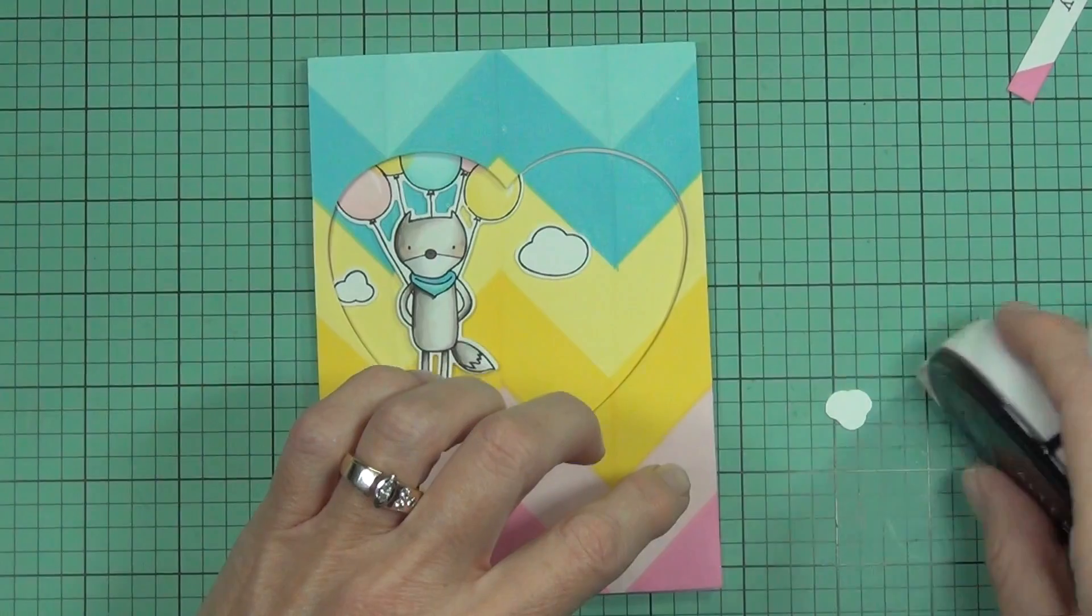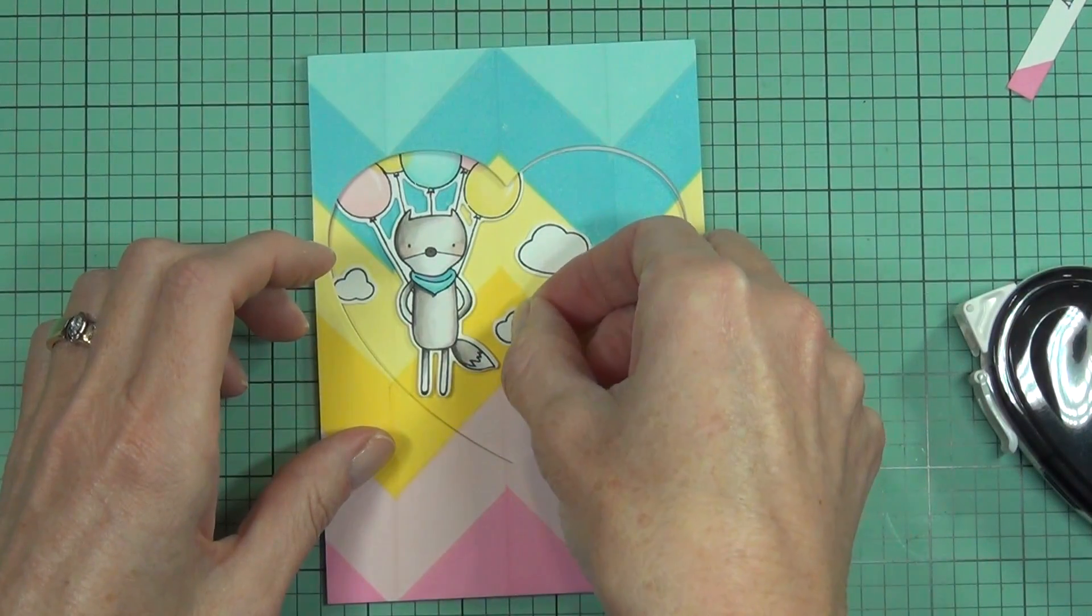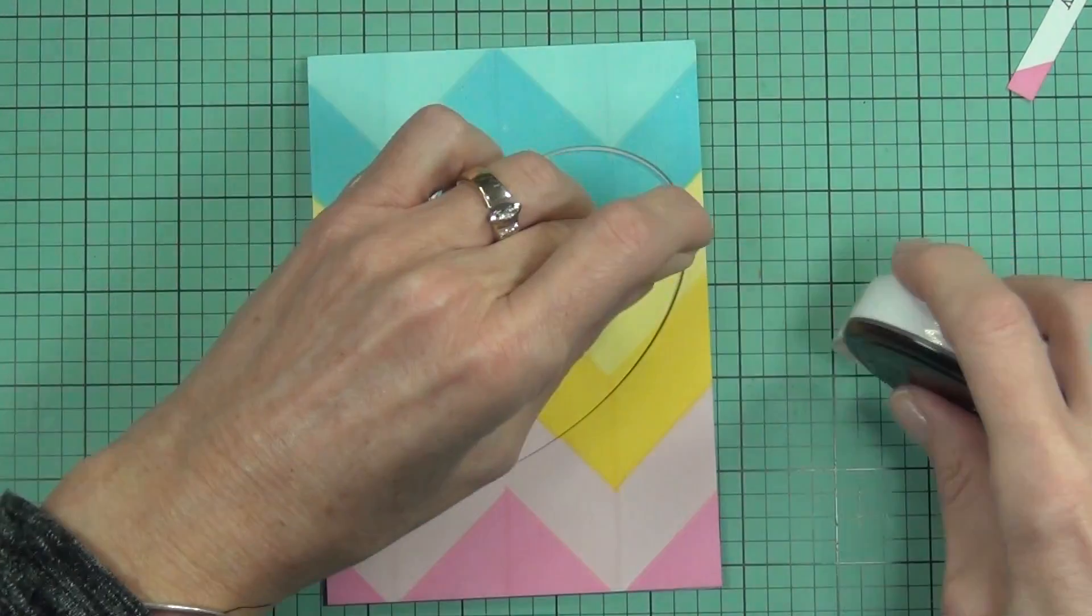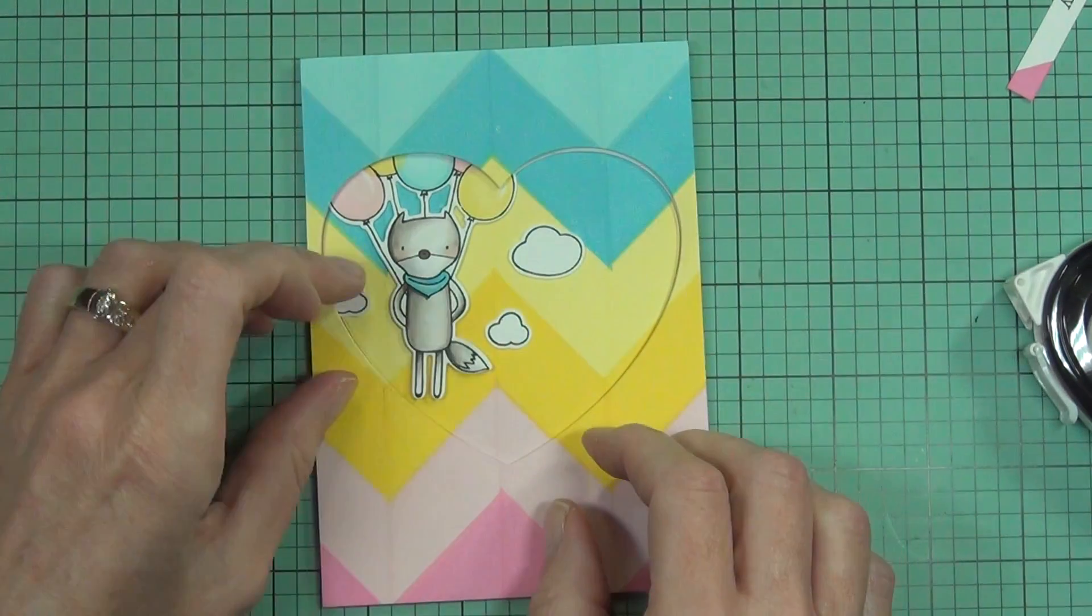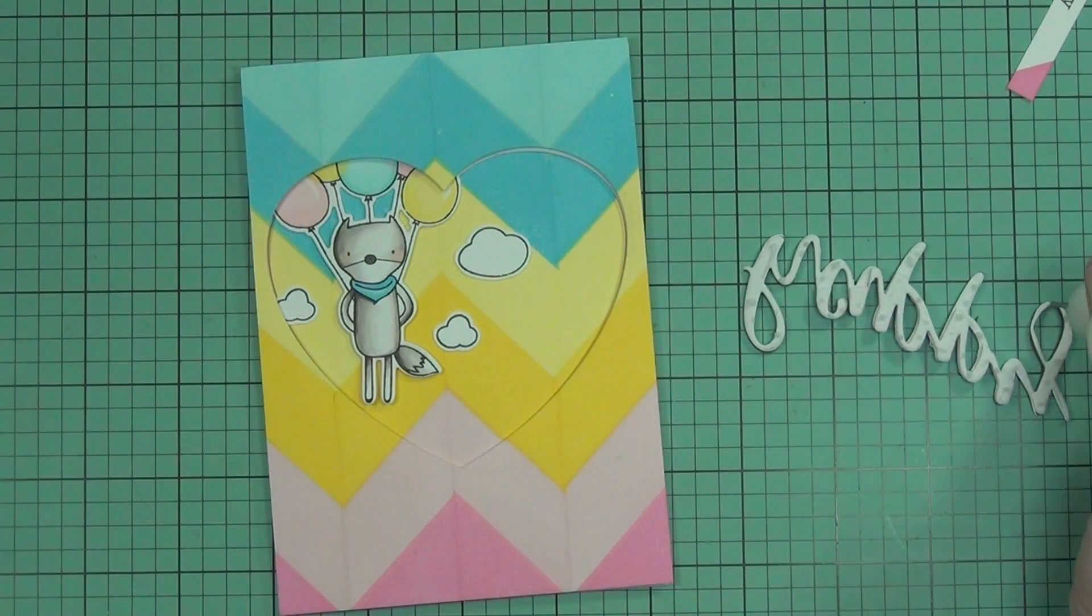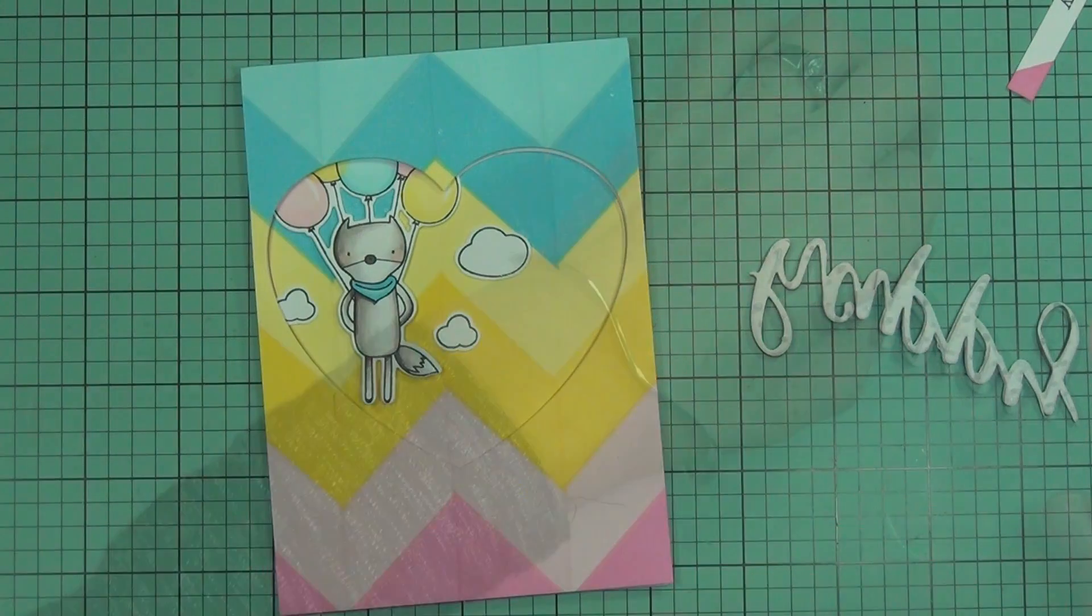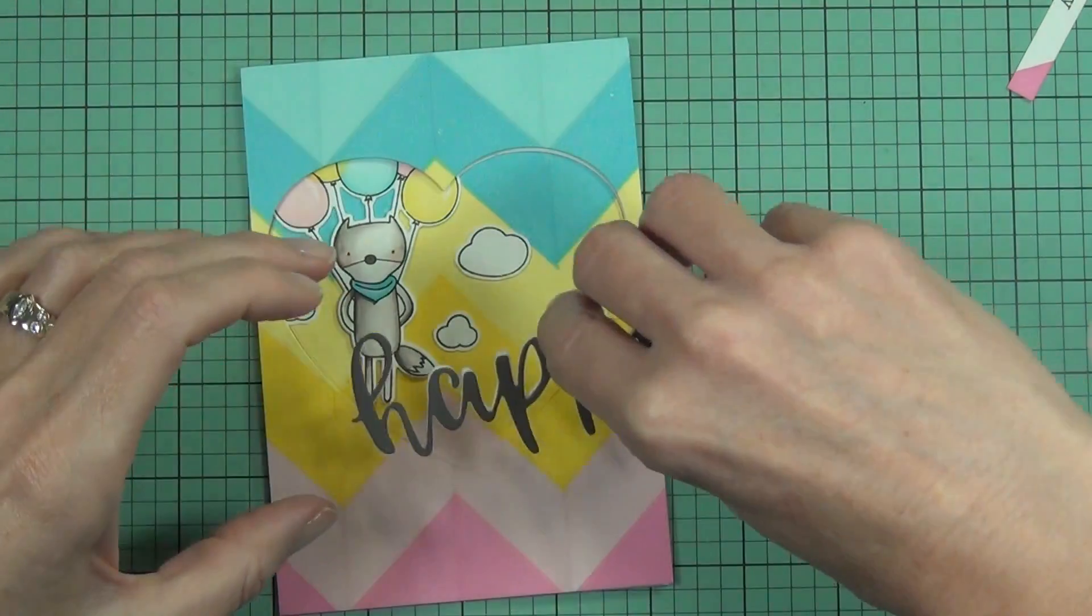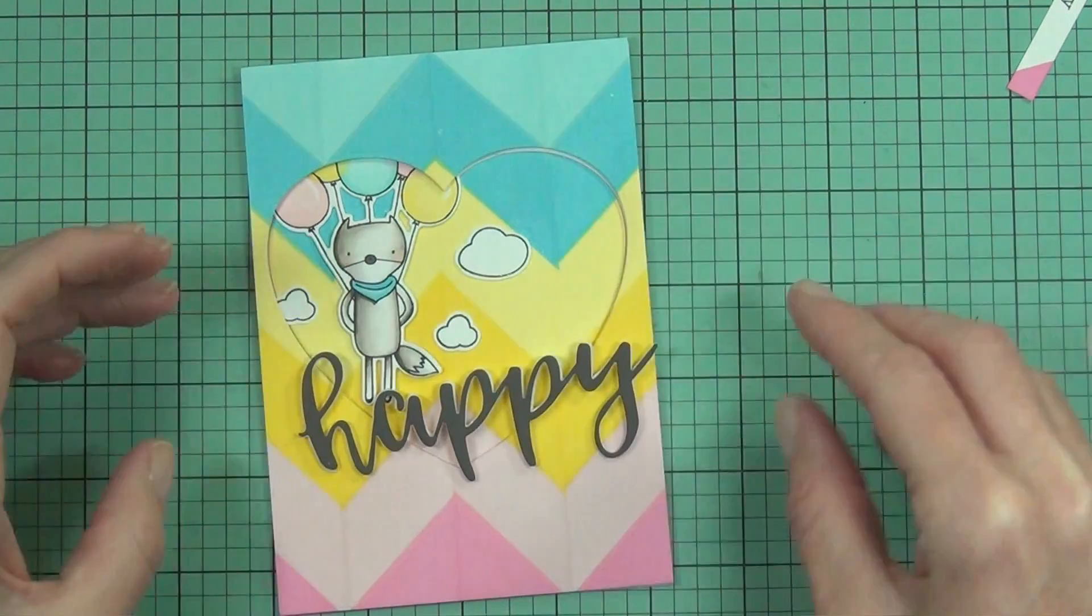While that's drying, I stamped out and fussy-cut some little clouds from the same Hug Me stamp set. I just thought it made it look more like the fox was floating up through the recessed heart—I mean, that's a really natural thing that's going to happen in the real world. Then I can just use some matte medium behind my sentiment and fit that in place. It's almost like a jigsaw puzzle.